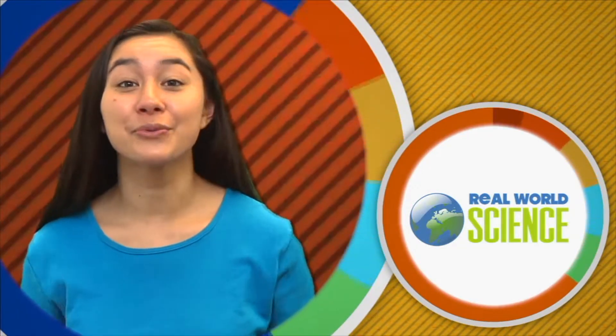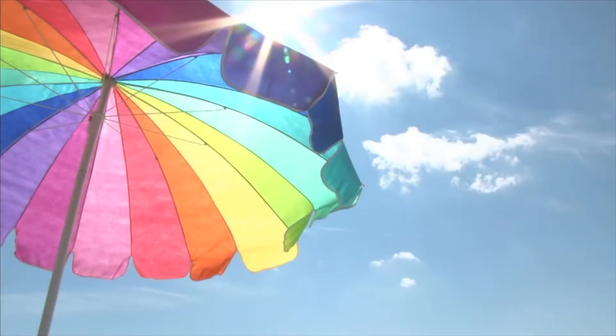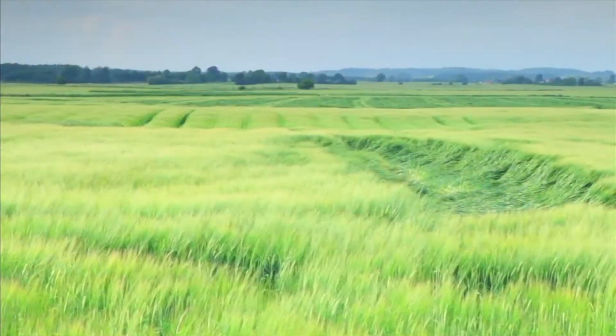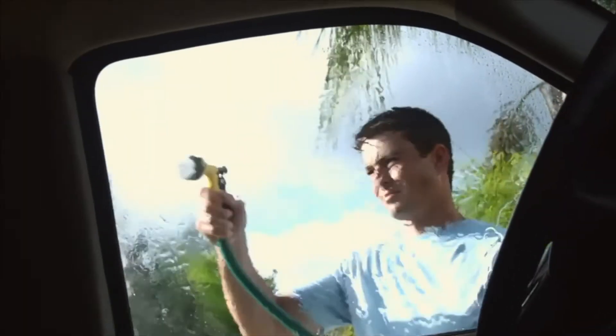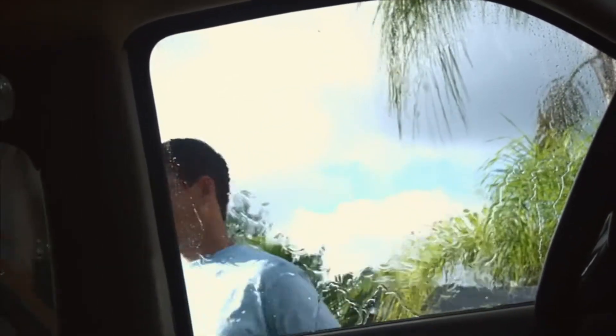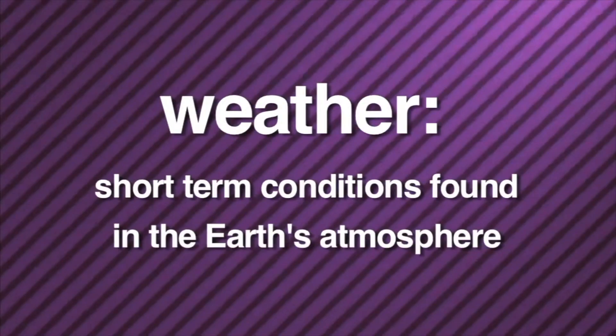Hi, I'm Kirsten. Welcome to Real World Science. What's the weather outside your window today? Is it raining? Is it hot? Maybe it's snowing. Is there a light breeze or is the wind blowing hard? What would the weather be like tomorrow? You may not know, but you can be sure the weather will most likely change. That's because weather is the short-term conditions found in the Earth's atmosphere. All places or regions on Earth have a particular weather pattern. A weather pattern that takes place over a specific area is called climate. Let's talk about climate.